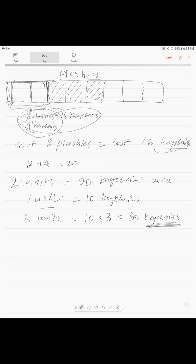So instead of 30 keychains, we want to know how many plushies. So 30 divided by 2 is 15. So 30 keychains, the price.